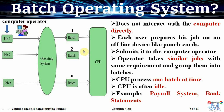In batch operating system, the CPU is usually idle while switching from one batch to another batch. This is the disadvantage of the batch operating system. A few examples of batch operating systems are the operating systems used in payroll systems to generate salary bills, and similarly, the operating system used to generate bank statements.